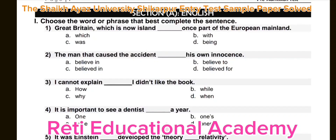Question number two: The man that caused the accident dash his own innocence. Options: A) believe in, B) believe to, C) believed in, D) believed far. The correct answer is C) believed in. The man that caused the accident believed in his own innocence.